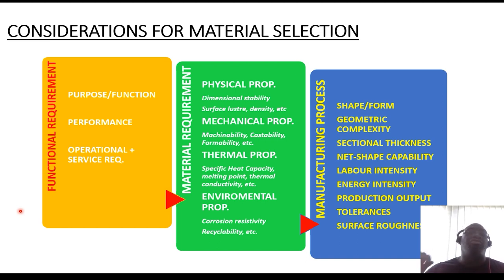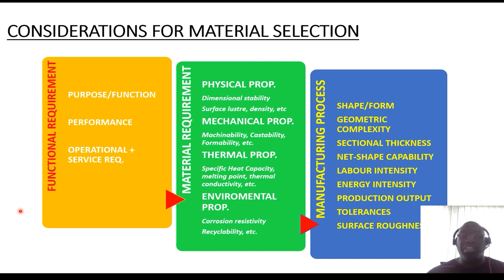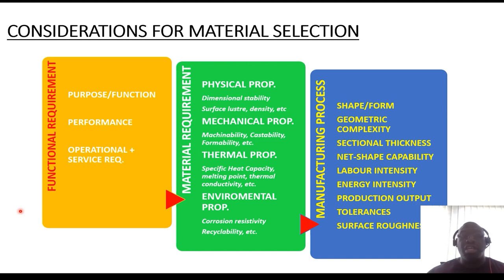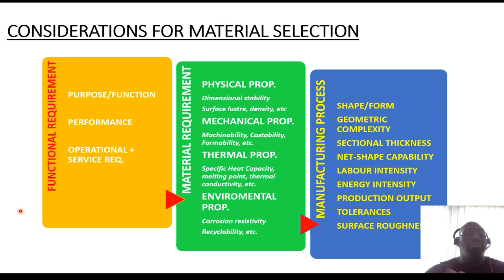Mechanical properties look at things like strength, stiffness, fatigue life, and fracture toughness, and also extend to the mechanical properties relevant to component manufacturability — such as castability and formability. Thermal properties include specific heat capacity — how much heat a component can retain over time — and melting point. If the product is operating in an environment of a thousand degrees Celsius and beyond, can the component operate within that environment without melting or transitioning from its solid to liquid state? These are things that need to be considered.